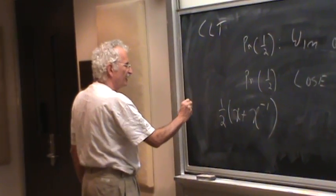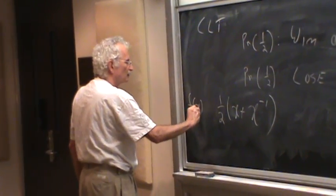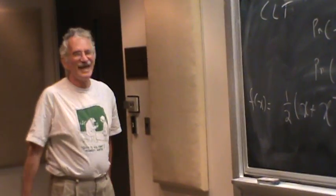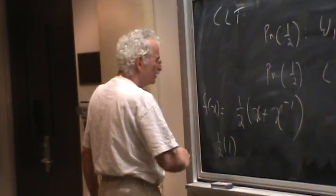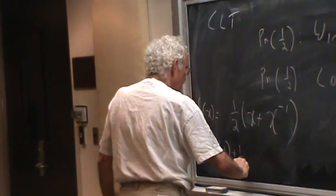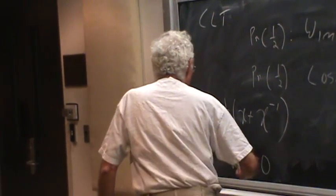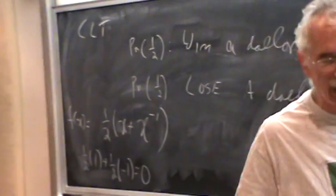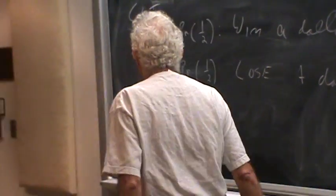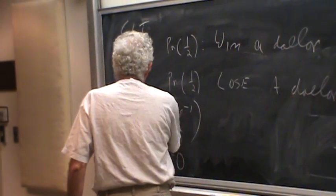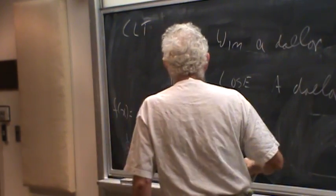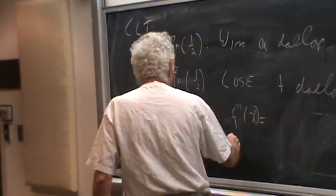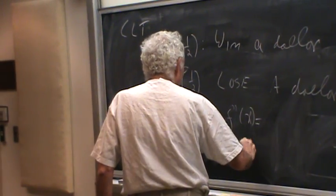So the so-called probability generating function of this is simply one-half times x plus x to the minus 1, meaning with probability one-half you have a dollar, with probability one-half you lose a dollar. Let's call this atomic thing f of x. The expected gain, of course, is zero. One-half that you win a dollar, one-half that you lose a dollar. Now the expectation is zero for this one single Bernoulli trial, fair Bernoulli trial. It's a fair coin. And the expectation, if you take the second derivative, is f double prime of one, it's also one.